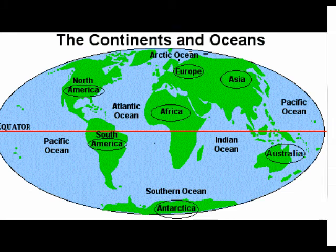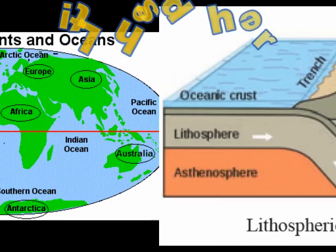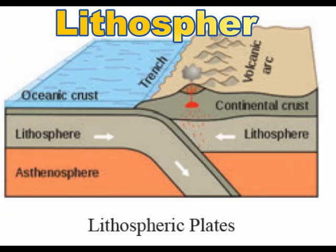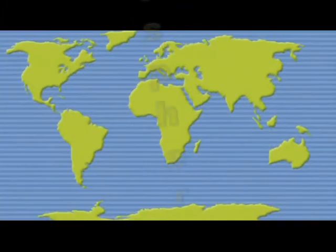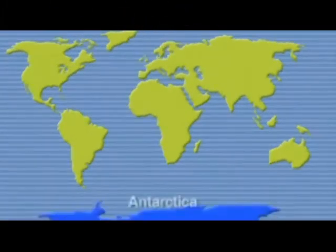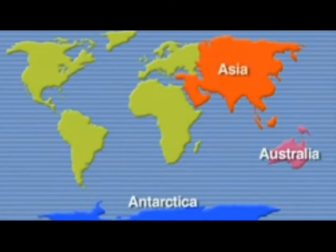We learned what is lithosphere in the previous lesson. Litho means a rock, isn't it? The lithosphere is made up of 7 large landmasses known as continents.